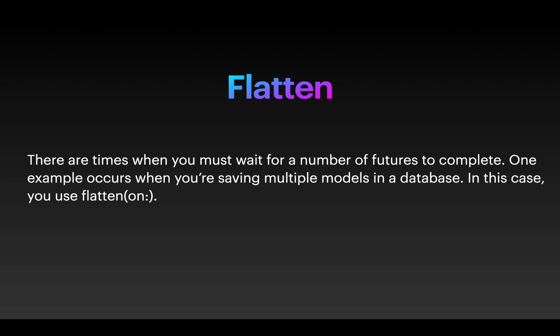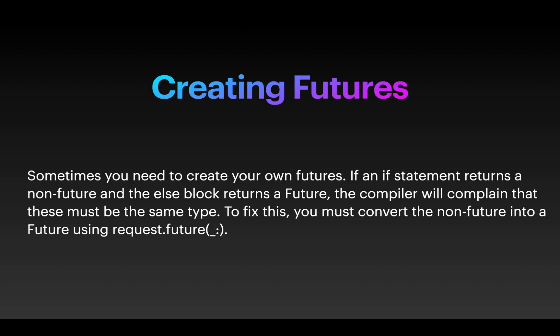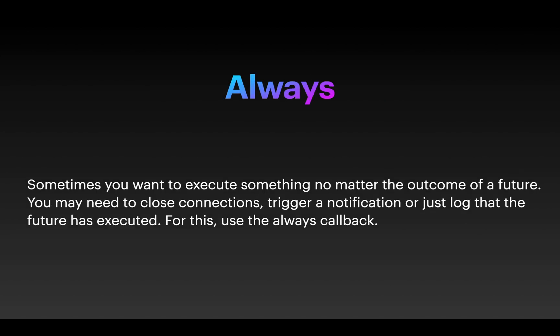There are times when you must wait for a number of futures to complete. One example occurs when you're saving multiple models in a database — in that case you can use the flatten function. Sometimes you just need to create your own futures. For example, if an if-statement returns a non-future and the else block returns a future, the compiler will complain that they must be of the same type, so you can convert the non-future into a future. And sometimes you want to execute something no matter what the outcome of the future would be — for example, to close a connection, trigger a notification, or just log that the future has been executed — and for this you use the always callback.